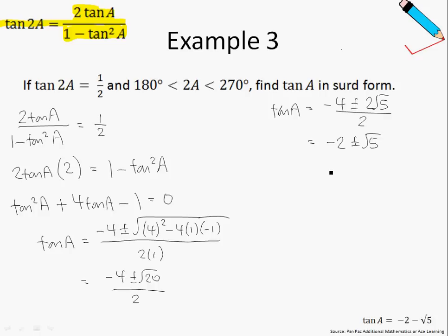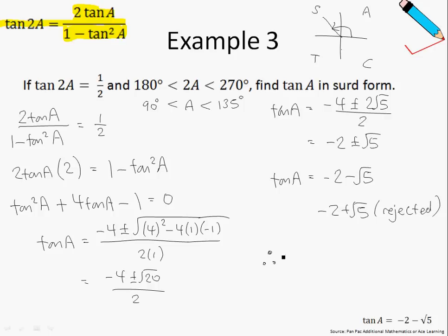Why is that so? Recall that if the range of 2A is between 180 degrees to 270 degrees, then the range of A should be between 90 and 135 degrees. Meaning to say, since we are in the sine quadrant, because 90 to 135 degrees we are in the sine quadrant, therefore tangent should be negative. So tangent A should just be negative 2 minus root 5, where negative 2 plus root 5 is actually rejected. Our final answer will just be tangent A equals negative 2 minus root of 5.